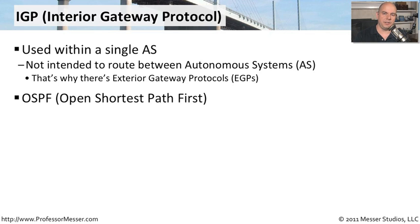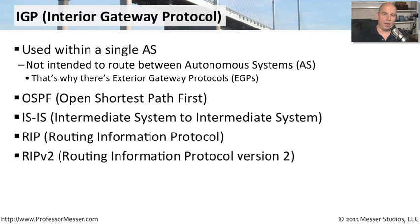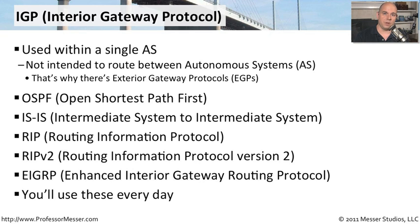An example of an interior gateway protocol might be something like OSPF or ISIS. You might also see RIP or RIP version 2 used within a single autonomous system for dynamic routing between routes. In a Cisco environment, you have the option of using the proprietary protocol EIGRP to have all of the routes in your routers update themselves automatically. These are routing protocols you'll use all the time when managing a set of routers in your autonomous system.